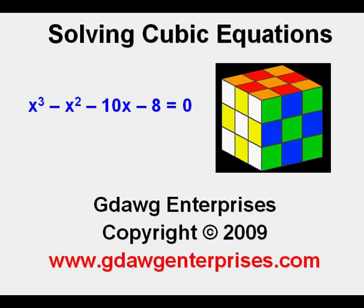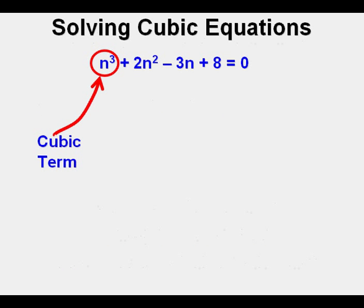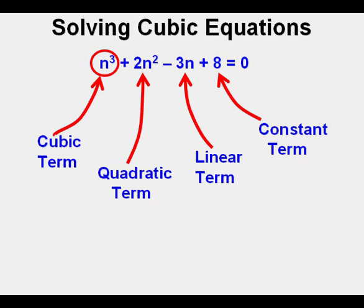Solving cubic equations. The next logical step in polynomial equations after quadratic equations is cubic equations. A cubic equation has a cube term or a variable raised to the third power. Cubic equations or third degree polynomials may also have a quadratic term, a linear term, or a constant term, or any combination of these terms, but the cubic term is the only term necessary to have it be a cubic equation.